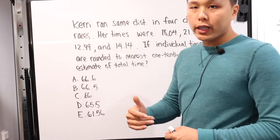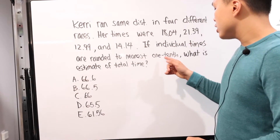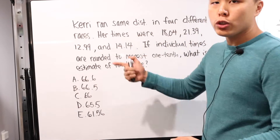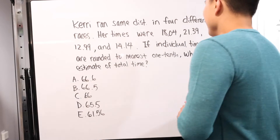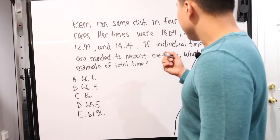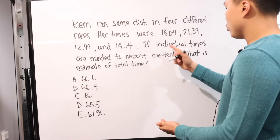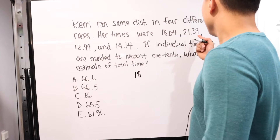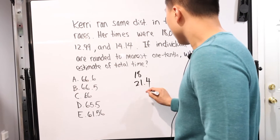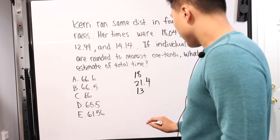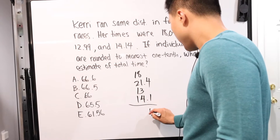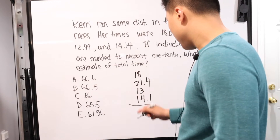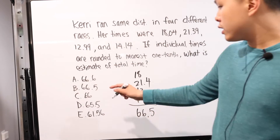Here is where it gets a little tricky. Since it says to round to the nearest one-tenth and then estimate the total time, you have to follow that specific order. So rounding each: 18.04 becomes 18.0, 21.39 becomes 21.4, 12.99 becomes 13.0, and 14.14 becomes 14.1. Then you add them all together and get 66.5.